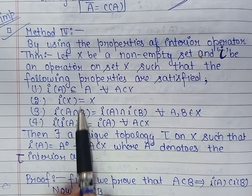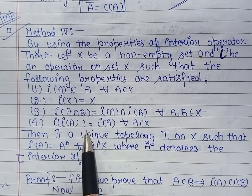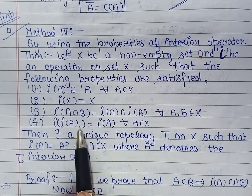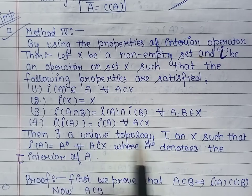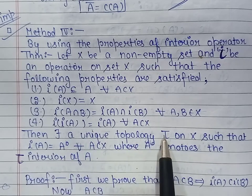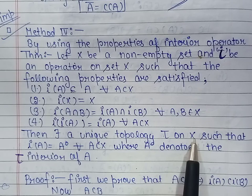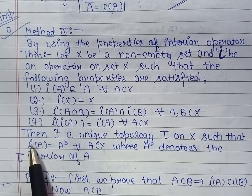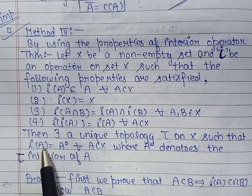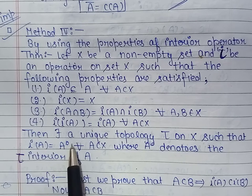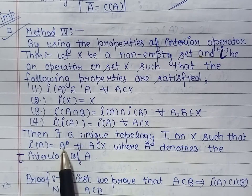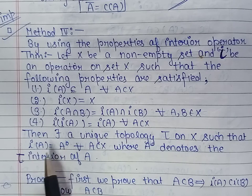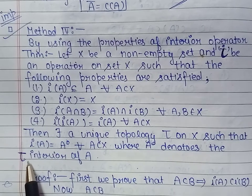Given these four properties, we are to prove that there exists a unique topology τ on the set X such that I of A denotes the interior of A with respect to the topology τ.